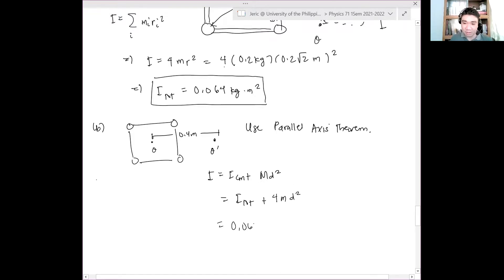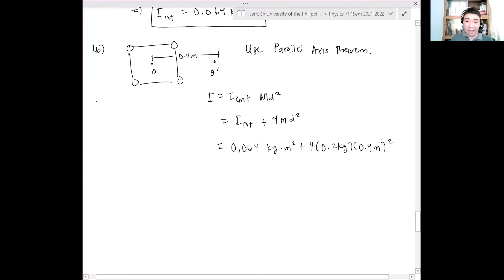And this is simply 0.064 kilogram meter squared plus 4 times 0.2 kilograms times 0.4 meters quantity squared. And hence, I here is 0.192 kilogram meter squared. That is the final answer. Questions? May tanong? None.